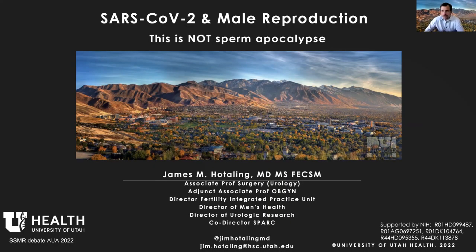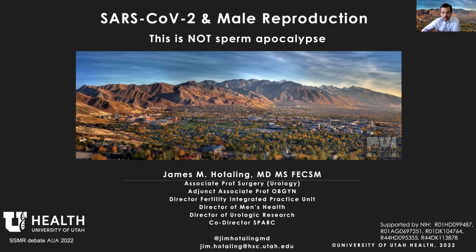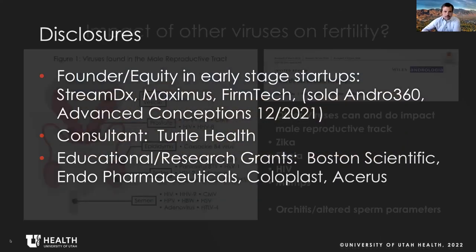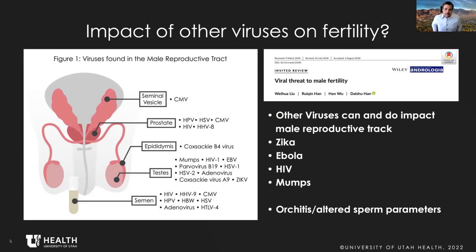Dr. Hotaling begins: We published the first paper showing that COVID does not get into semen. A lot of people have said this is a 'sperm apocalypse' — I clearly don't agree with that. In thinking about this, what other viruses have an impact on male infertility? Obviously Zika, Ebola, HIV, mumps. Much of this is thought to be due to either orchitis, the virus specifically getting into the testis — which has the blood-testis barrier, a privileged environment due to potential antigenicity with sperm — or a fever, which could also cause issues.